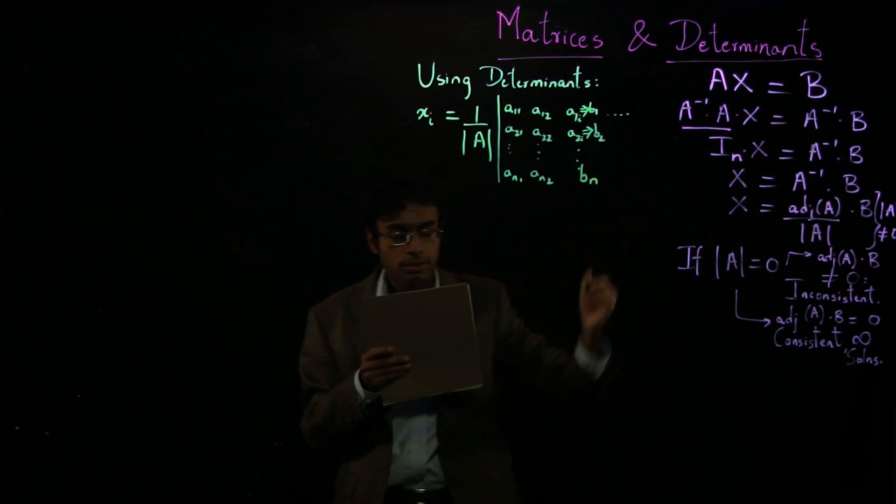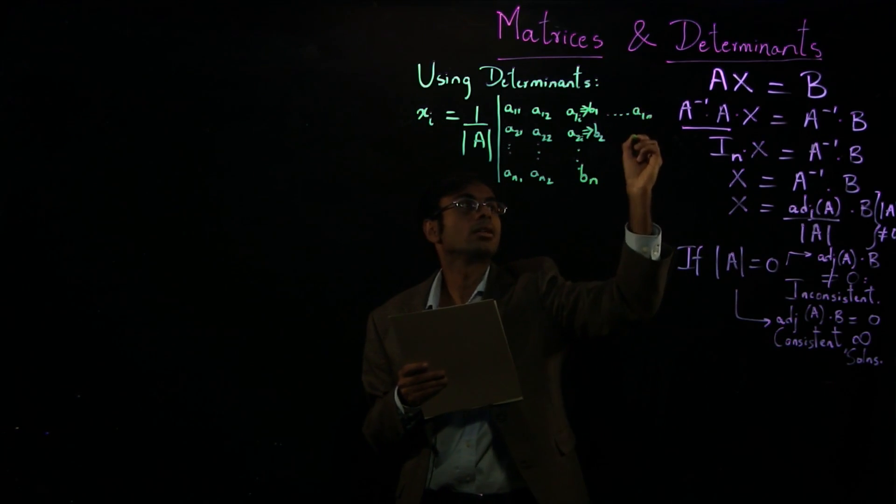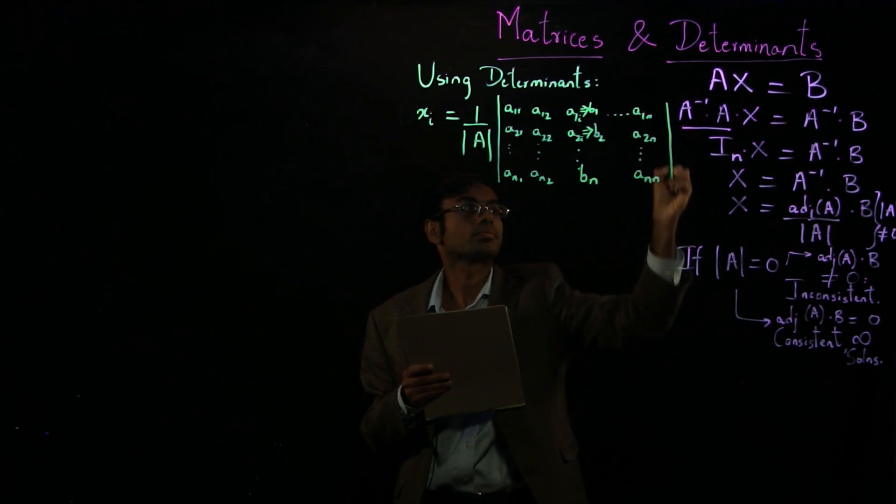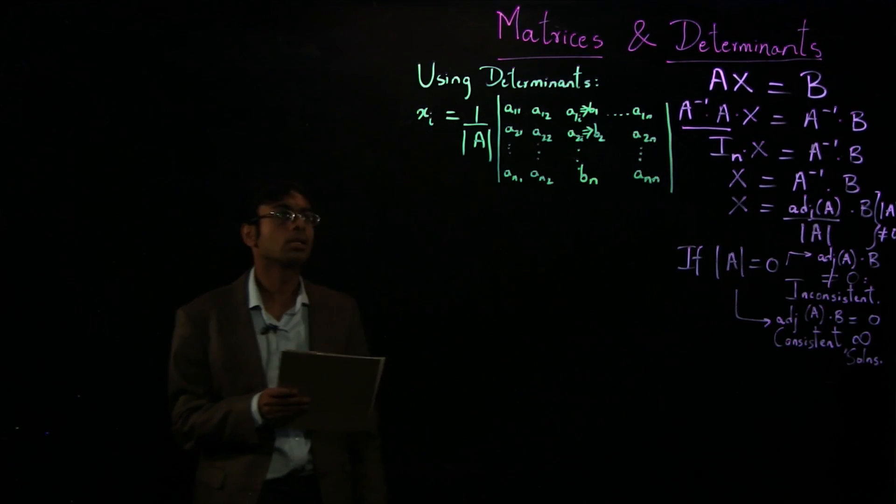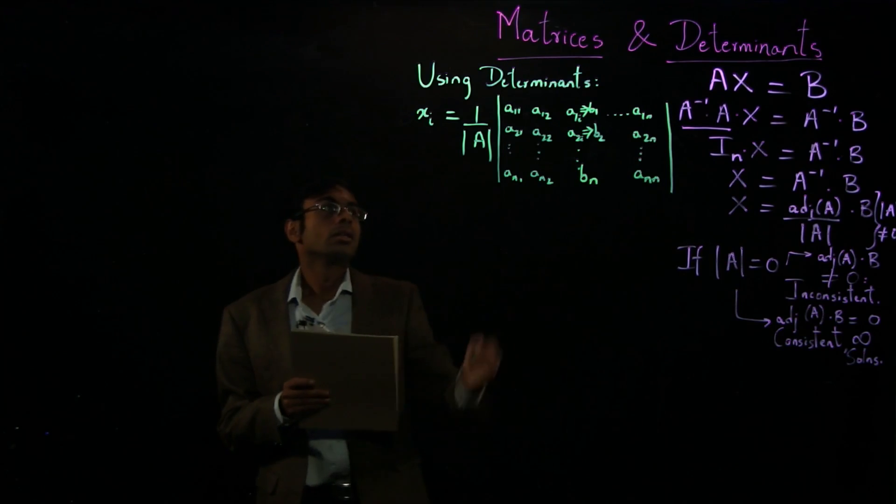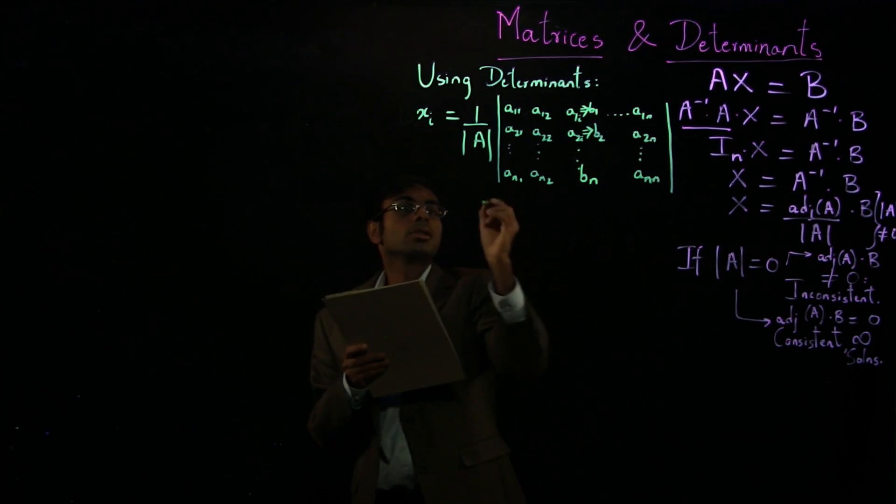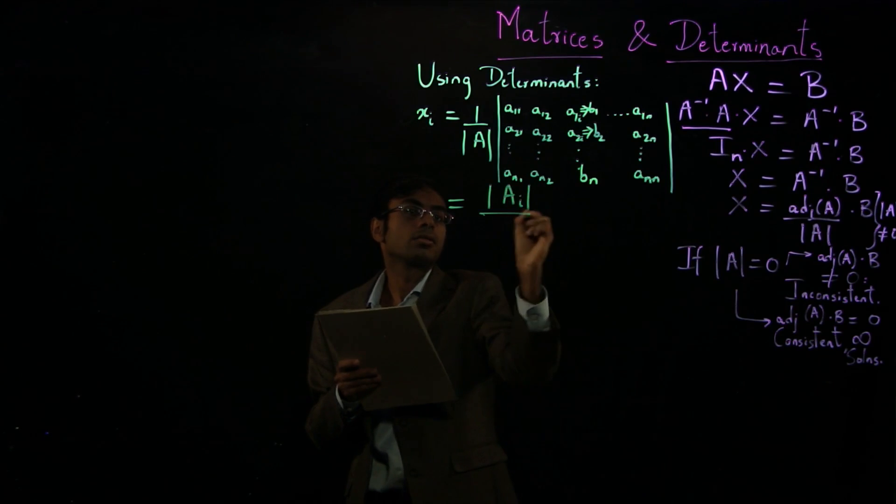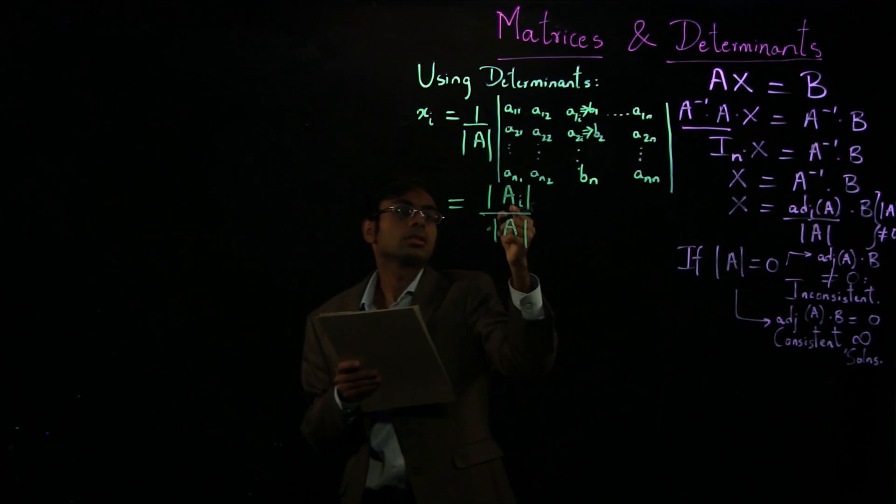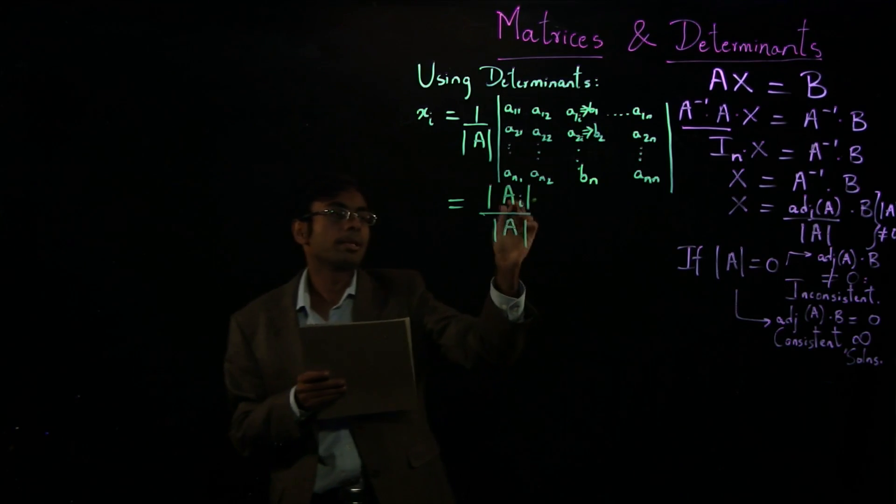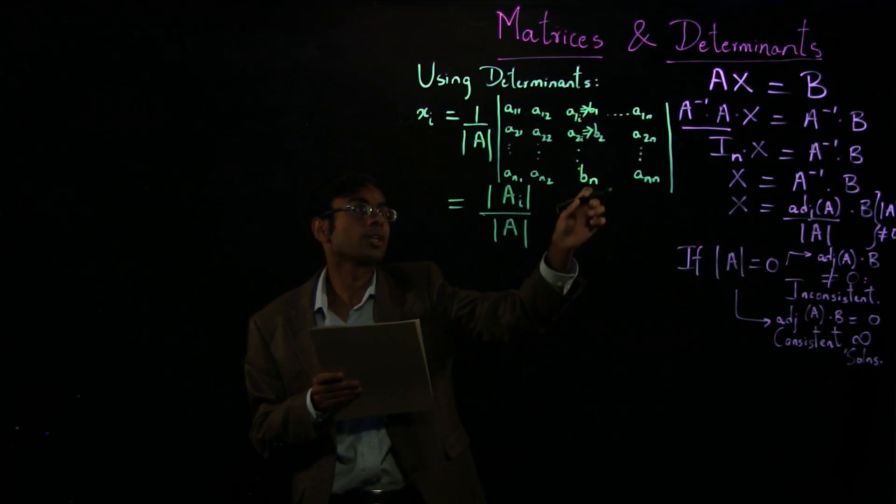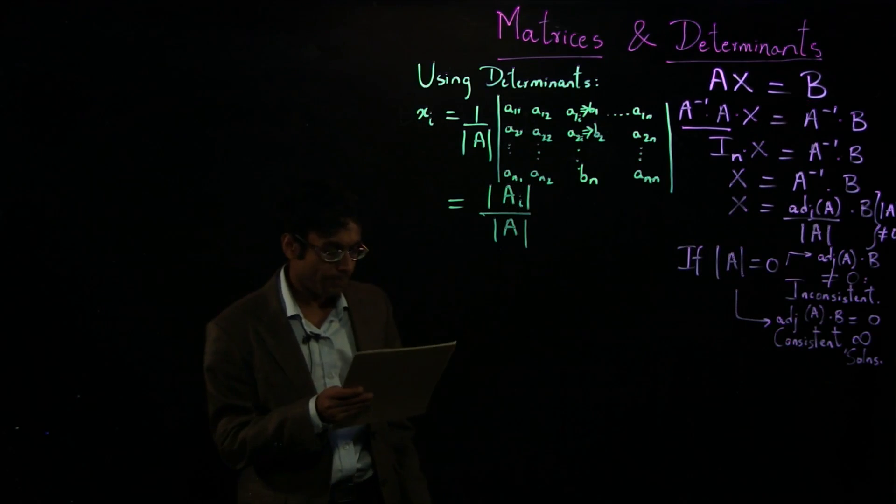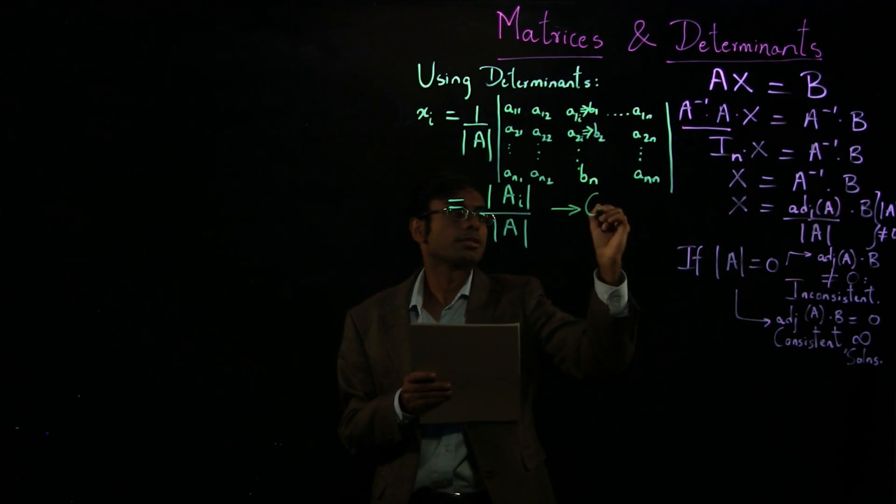And then the rest of the determinant stays the same, all the way up to a1n, a2n, aNn. So this whole operation, we can write it in shorthand as ai over a, where the determinant ai basically means that you are substituting the ith column of that determinant by the right-hand side, or the elements of matrix b. And this is known as Cramer's rule.